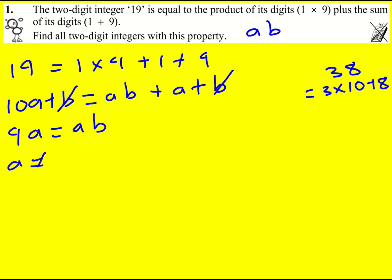Now A is not equal to 0 because it's a leading term here. We're interested in two-digit integers. So this means that it must be that B is equal to 9.